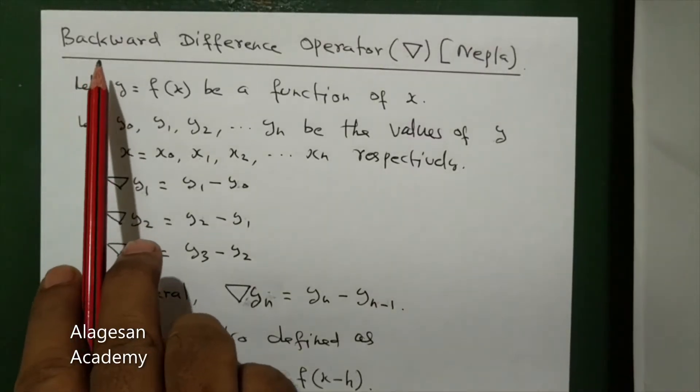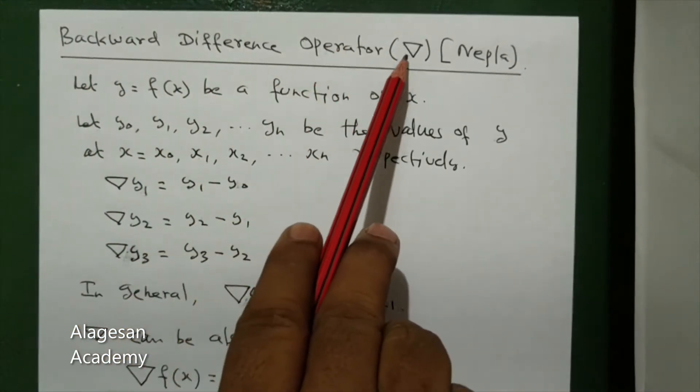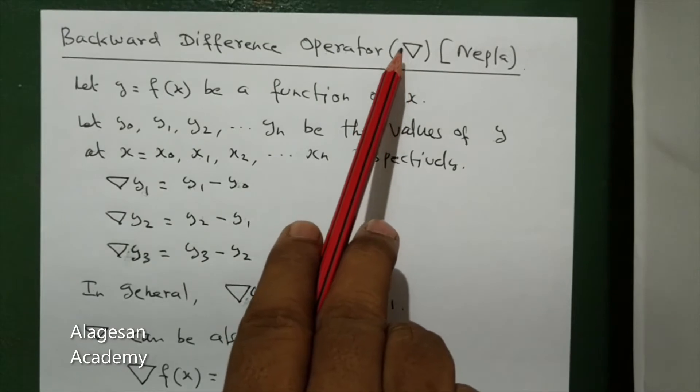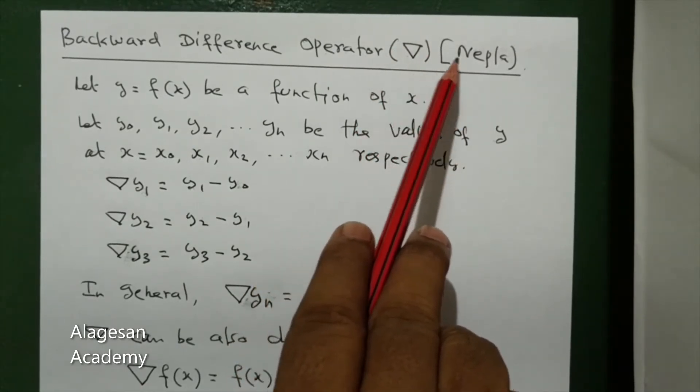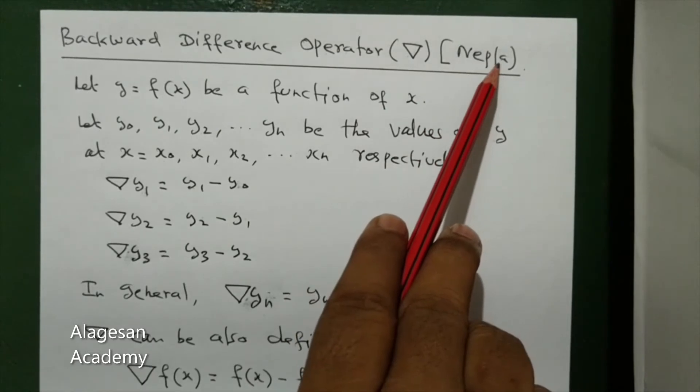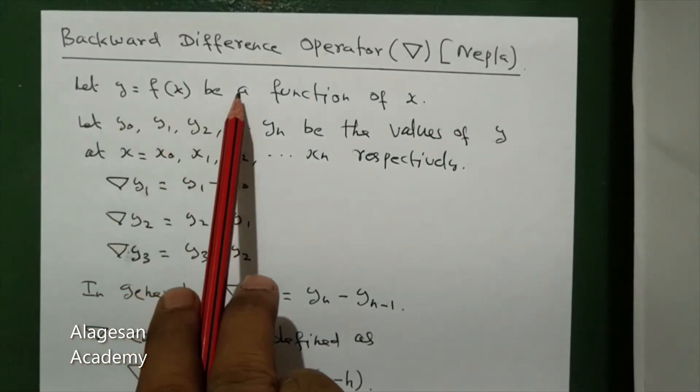Hi student, next topic is backward difference operator. It is denoted by an inverted delta, like this. It is read as nepla or neplans. Let y equal to f of x be a function of x.